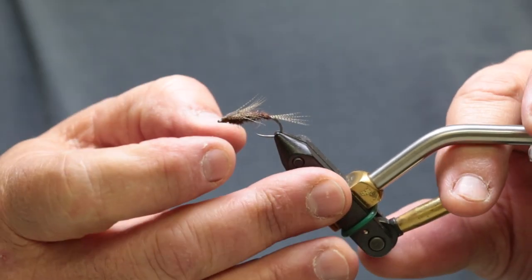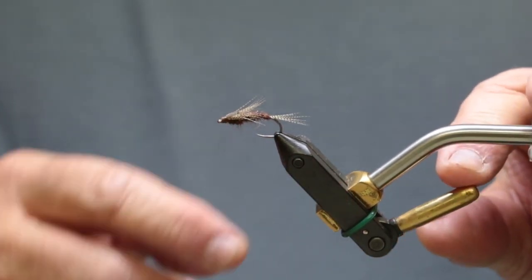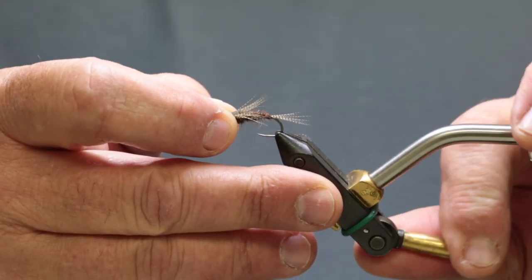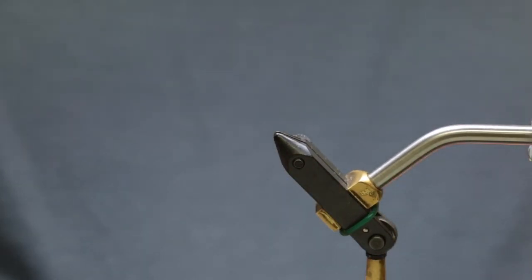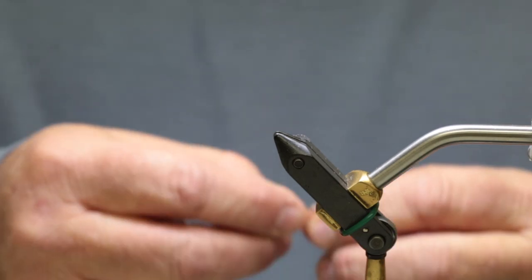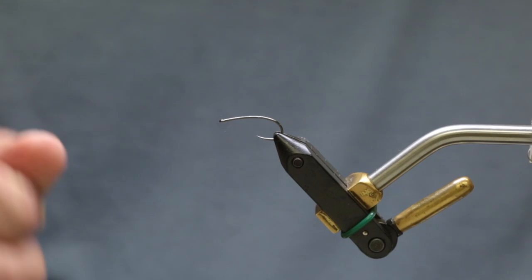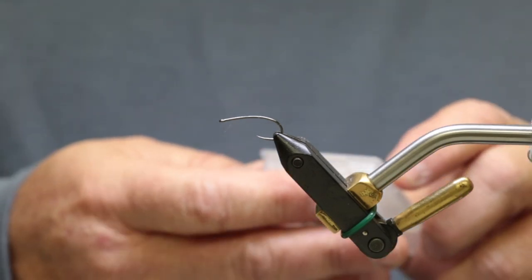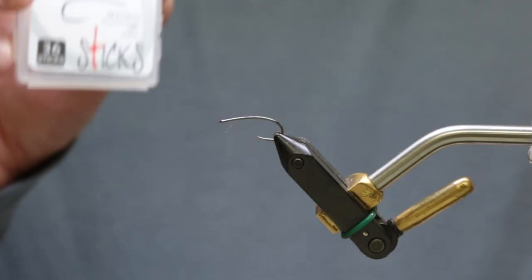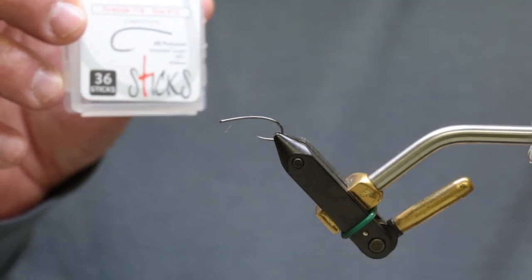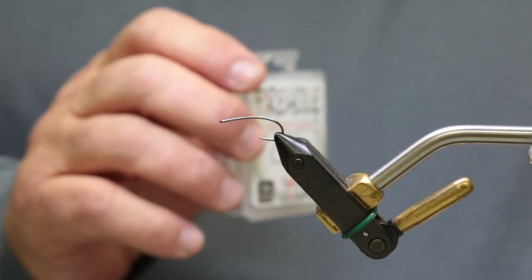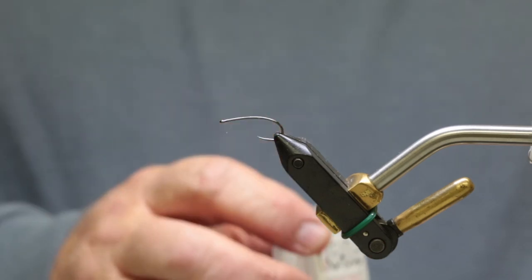1978, and I've got a Firehole hook. I use two different style hooks. I'm beginning to really like these Firehole hooks and this is a Firehole 718, size 12. I use size 14 too, but for this demonstration I'm going to do size 12 just to make it easier to see.